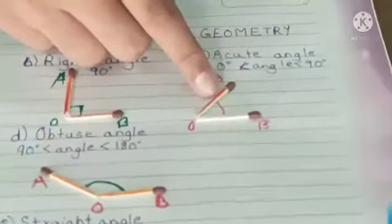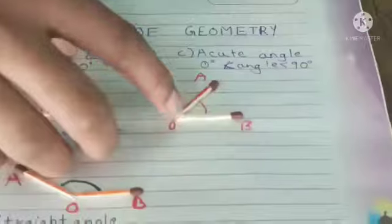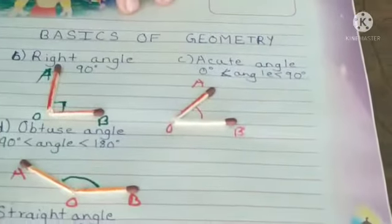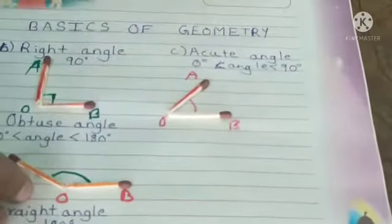After this, our angle is acute angle. Greater than 0 degrees and less than 90 degrees, we call it acute angle.